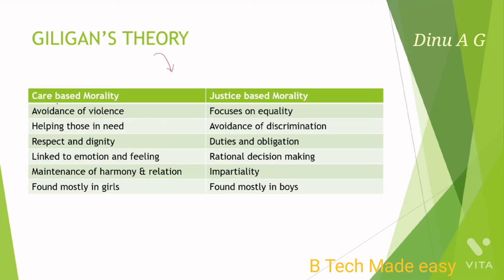Gilligan's theory distinguishes between male-oriented and female-oriented moral development. The female-oriented approach is care-based, while in the case of boys it is justice-based. According to Gilligan, female moral features include: avoidance of violence, helping those in need, respect and dignity, and kindness to emotion and feeling. These moral development features are mostly found in girls.